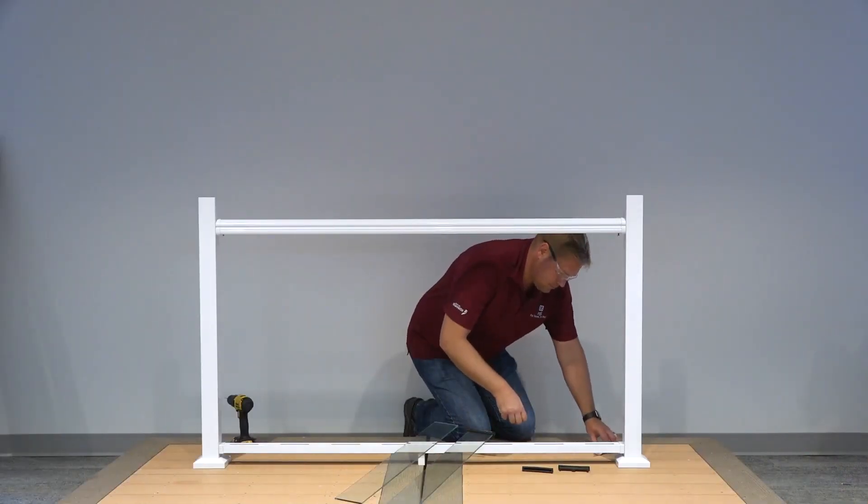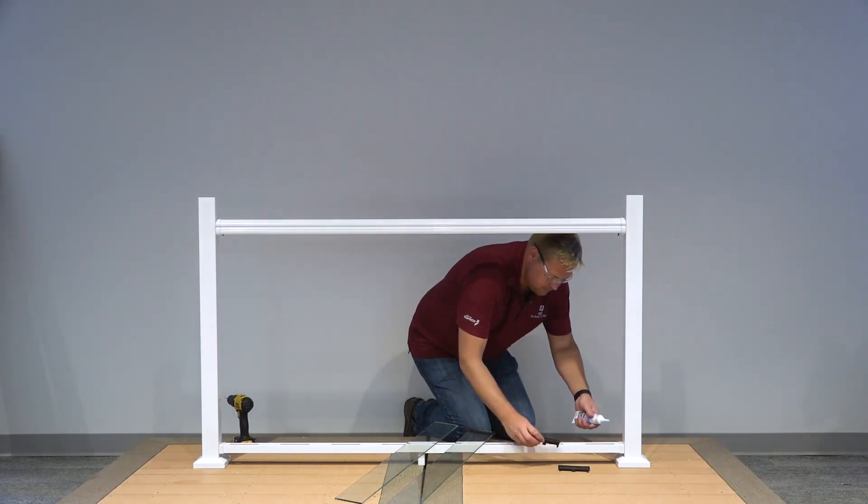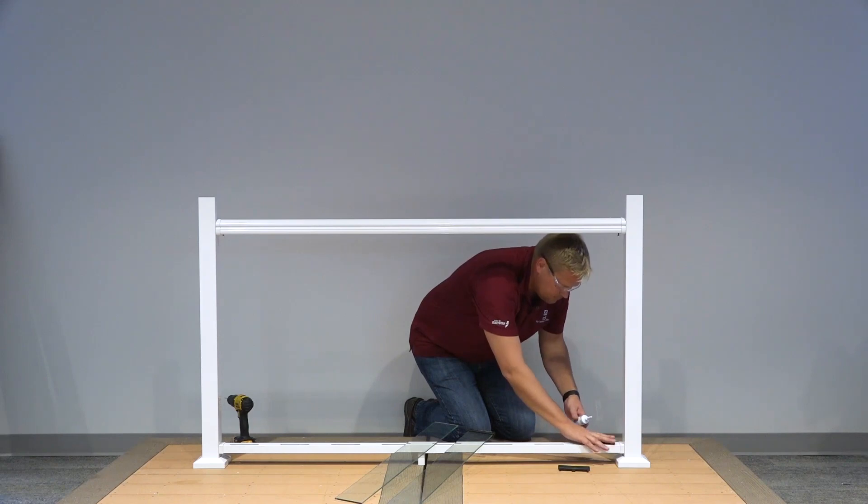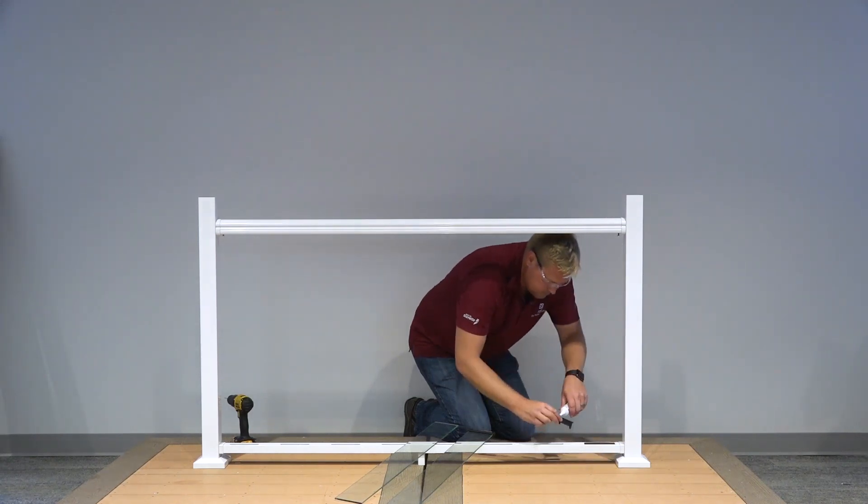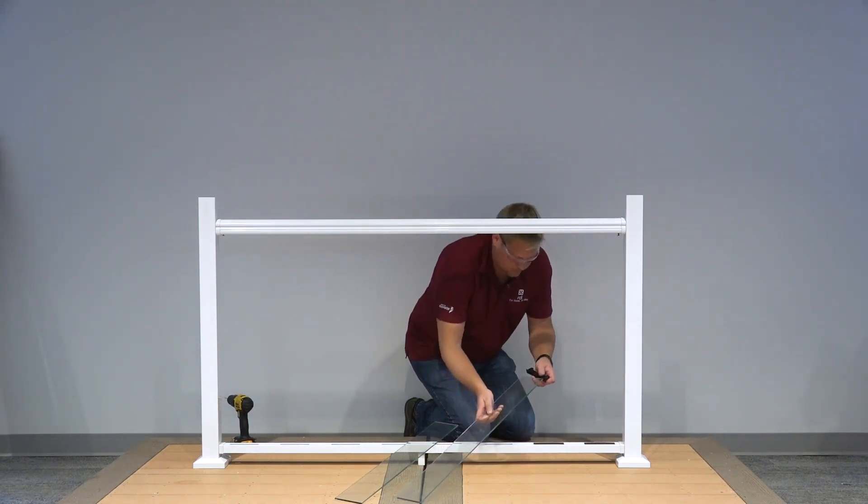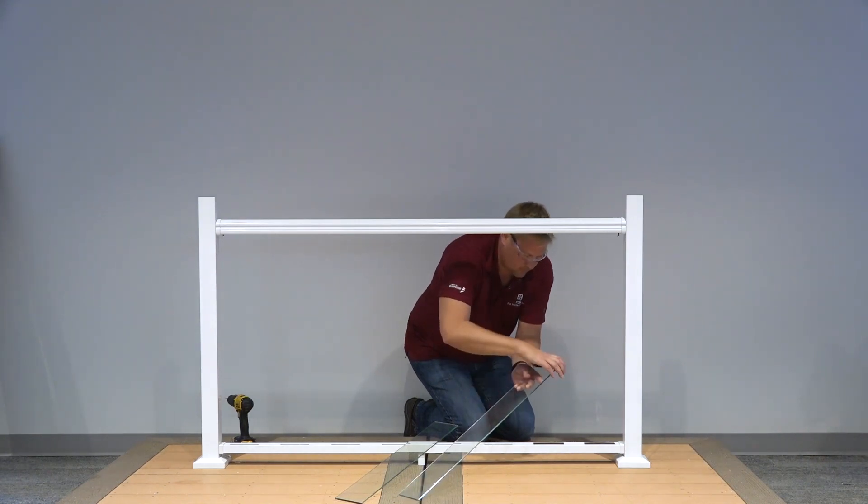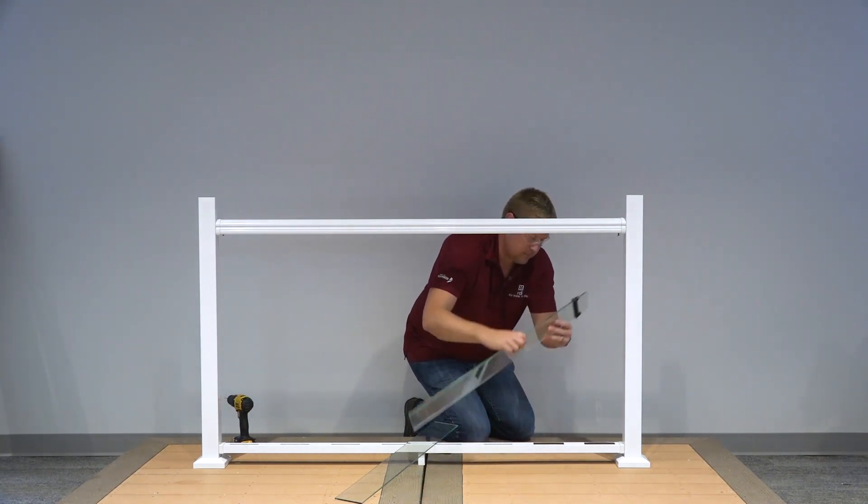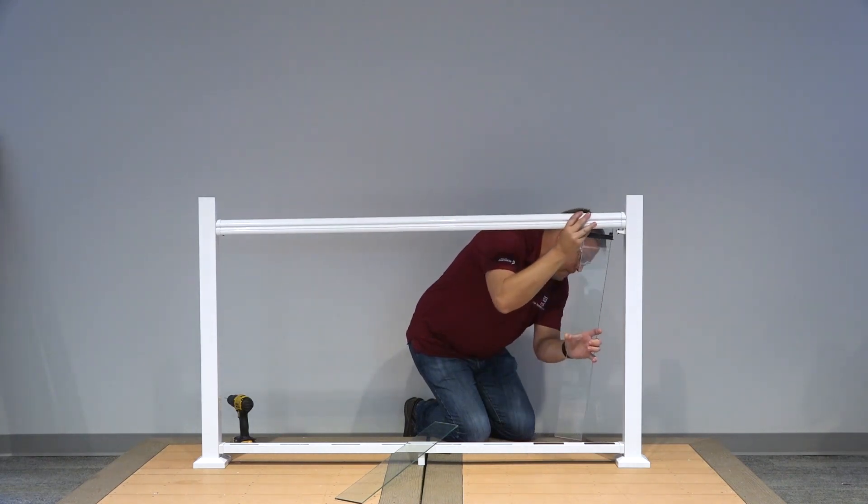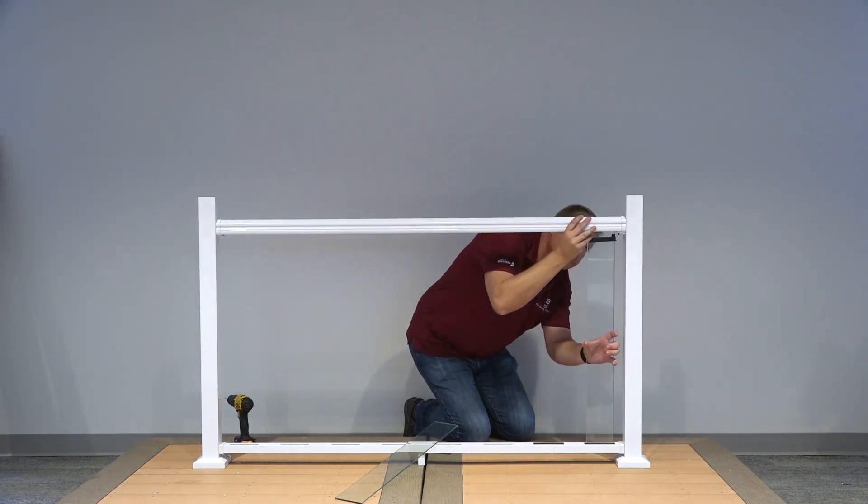Next, install the glass slats by adding a drop of silicone caulk into the middle of the bottom glass gasket. Slide the top glass gasket over one end of the glass slat and at a slight angle, place the top of the glass slat up into the top beam, sliding it up enough to allow the bottom of the glass slat to drop down into the bottom glass gasket.